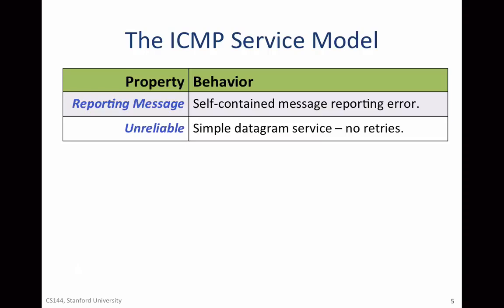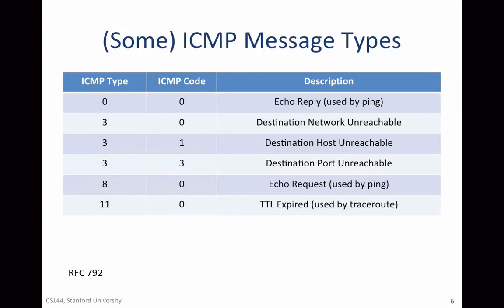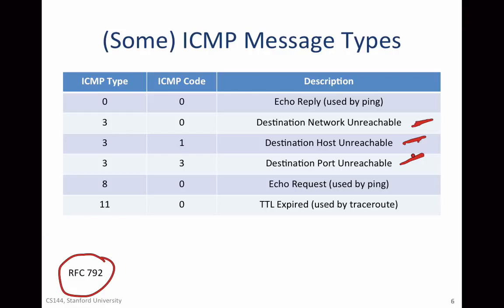Here are some particular ICMP message types — this is just a sampling of the six most important. You don't need to remember the types or codes; you can find those in RFC 792. We've already seen 'Network Unreachable,' which is type 3, code 0. There are two other destination unreachable types: 'Host Unreachable' — when a datagram gets to the last router but the router doesn't know where the host is — and 'Port Unreachable' — when the port or protocol ID inside the datagram isn't recognized at the other end. We'll also see how echo reply, echo request, and TTL expired are used.